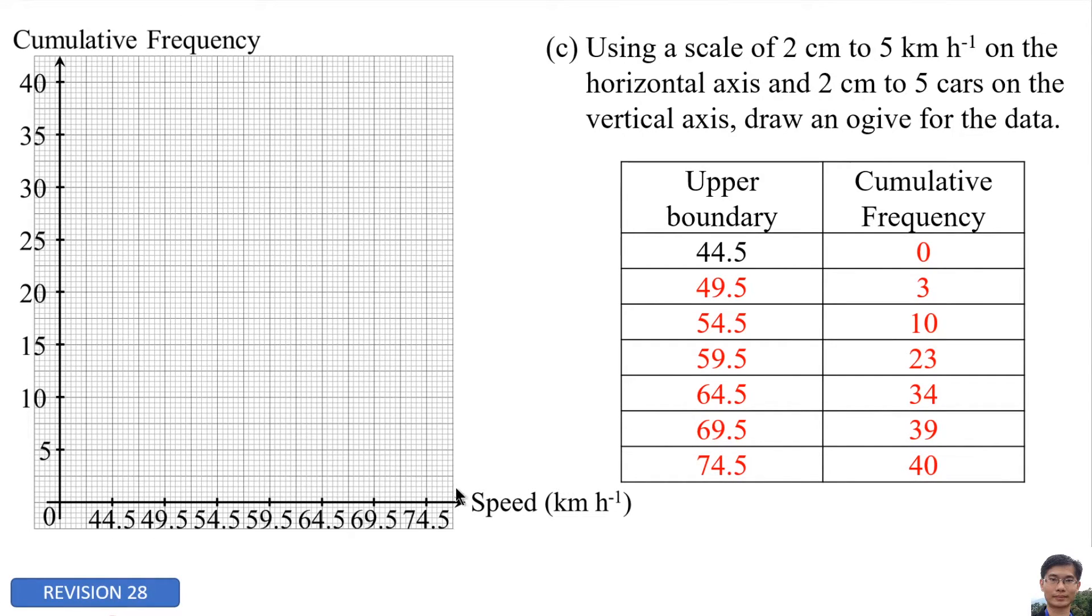The horizontal axis label is speed or upper boundary, and for the y-axis, the label is cumulative frequency. Please remember: the first speed, 44.5, is written here, not here. 44.5, 0. 49.5, 3, and so on. Make sure to plot all the points correctly, then connect all the points with a smooth curve and make sure the smooth curve goes through all the points.